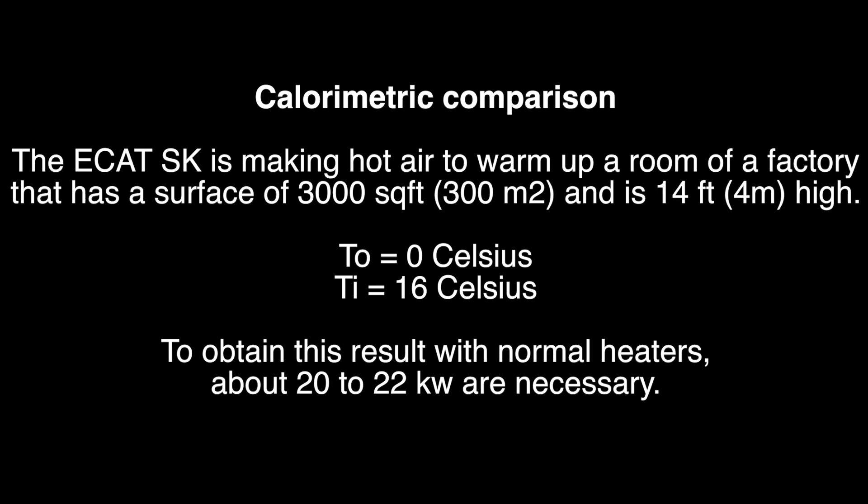For the T outside, the calculation that was made when the temperature was 0 degrees Celsius outside, or 32 degrees Fahrenheit, the room temperature was about 16 degrees Celsius, which is about 61 degrees Fahrenheit. To obtain this result with normal heaters would require between 20 and 22 kilowatt rating. So, you would need a boiler of about 20 to 22 kilowatts of power to heat up in these conditions with these results.